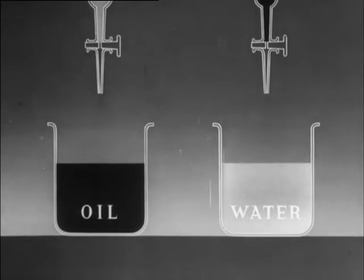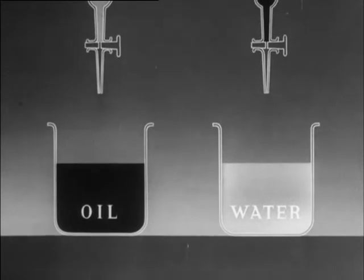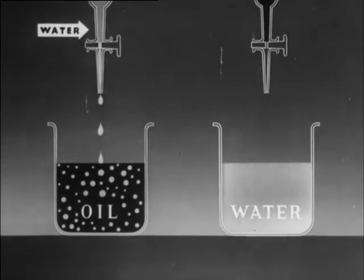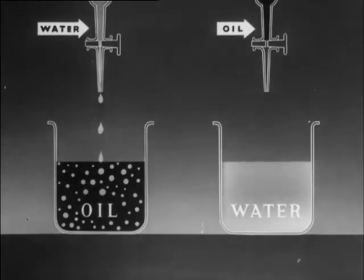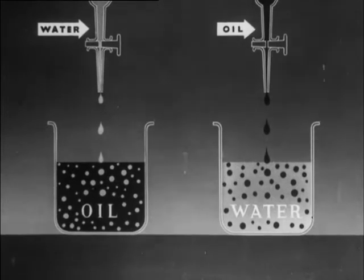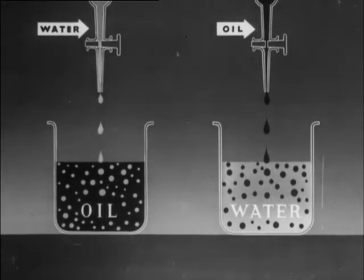Emulsions being dispersions of one liquid in another, it follows that there can be two types of emulsion with any two liquids. For example, water may be dispersed in oil or vice versa. Which type of emulsion is produced depends largely on the emulsifying agent.